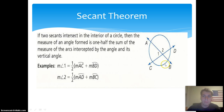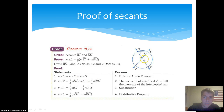A proof of that theorem: the measure of angle one equals the measure of angle two plus the measure of angle three, by the exterior angle theorem. The measure of angle two is equal to one half the measure of arc ST, and the measure of angle three is equal to one half the measure of arc RU.